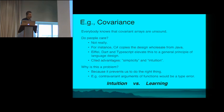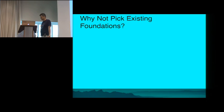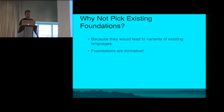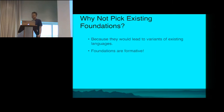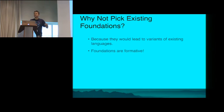Why not pick existing foundations? There's Featherweight Java, lambda calculus, logic, and others. For Scala, none were a good fit. With existing foundations you typically get variants of existing languages, and Scala is not a variant of an existing language. The existing foundations had too large an impedance mismatch to guide us competently in language design. You can encode everything in a Turing machine, but what does that tell you about your language?